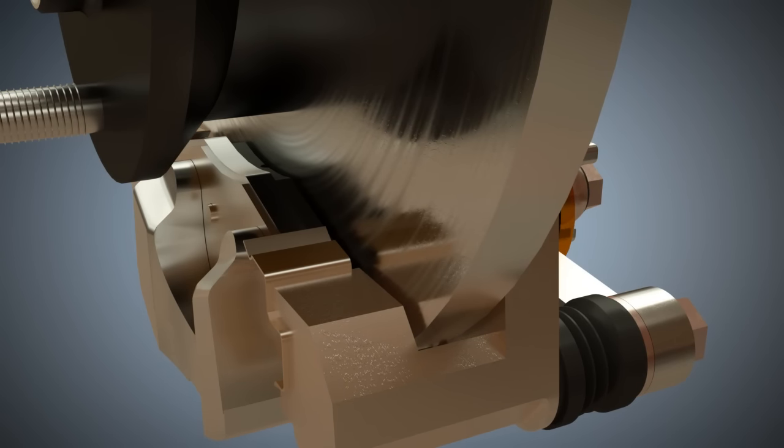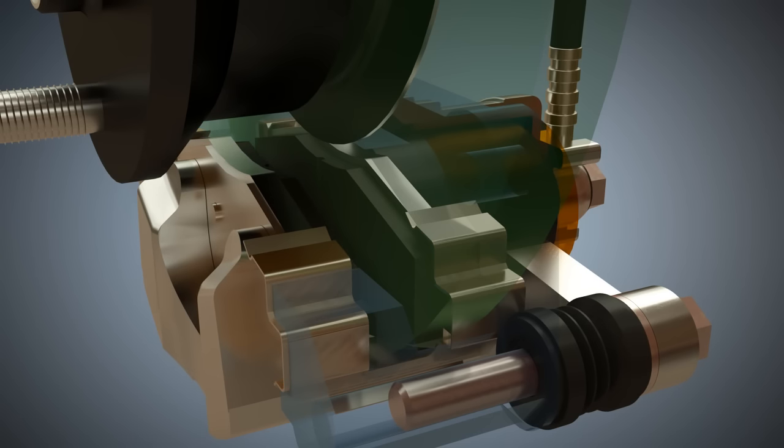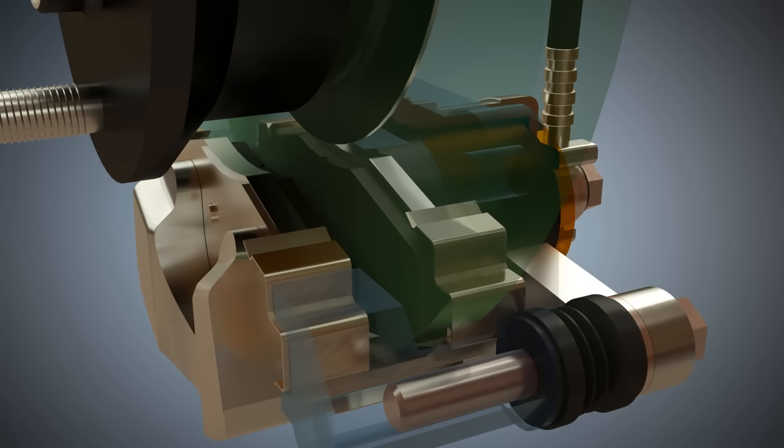The caliper piston is pressed against the brake disc by pressure, whereby the entire caliper slides backwards and presses the opposite brake lining against the brake disc.